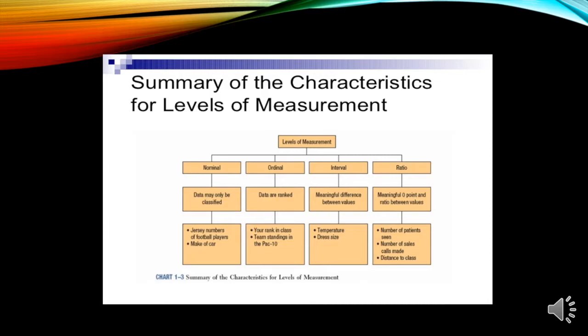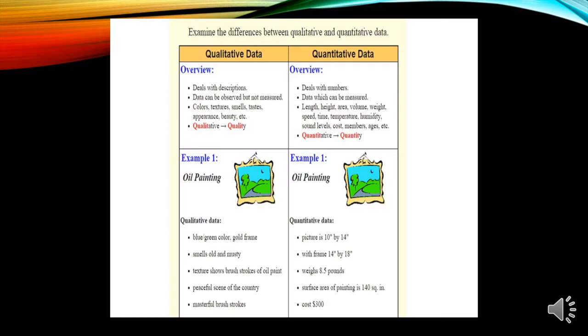Then we say ratio, meaning of zero point and ratio between values. Samples of this are numbers of patients seen, then number of sales calls made. How many clients do they contact every day or every working hour in call centers? Then distance to class.